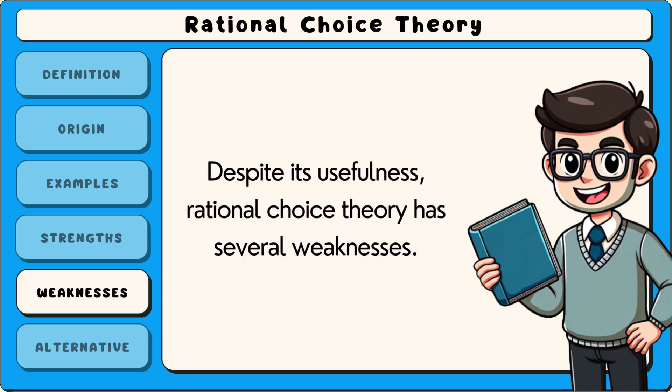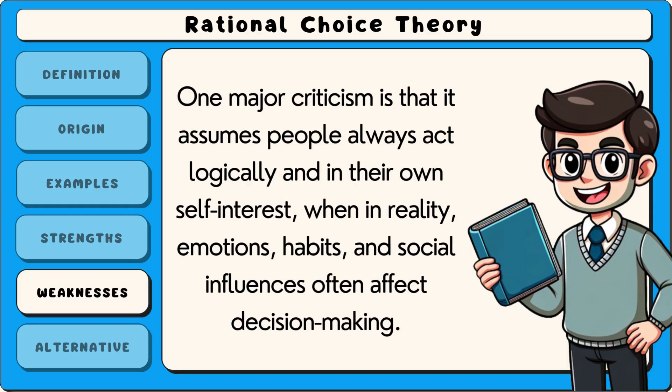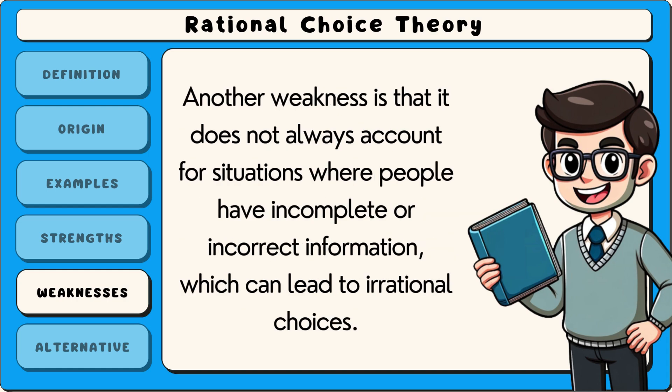Despite its usefulness, rational choice theory has several weaknesses. One major criticism is that it assumes people always act logically and in their own self-interest, when in reality, emotions, habits and social influences often affect decision-making. Another weakness is that it does not always account for situations where people have incomplete or incorrect information, which can lead to irrational choices.